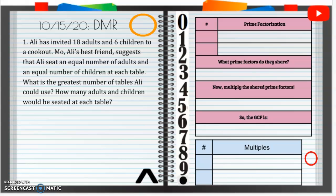Ali has invited 18 adults and 6 children to a cookout. Mo, Ali's best friend, suggests that Ali seats an equal number of adults and an equal number of children at each table. What is the greatest number of tables Ali could use? How many adults and children would be seated at each table?